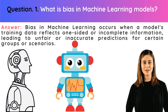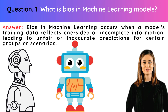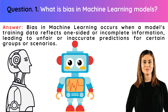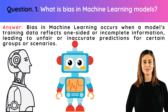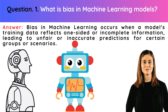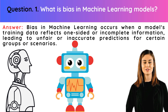What is bias in machine learning models? Bias in machine learning occurs when a model's training data reflects one-sided or incomplete information, leading to unfair or inaccurate predictions for certain groups or scenarios.